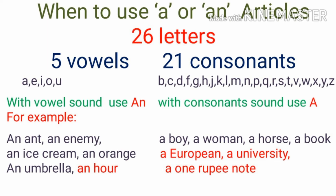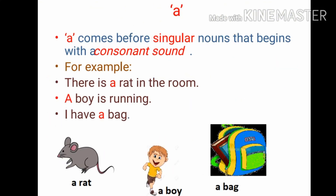Let's do this in more detail. A comes before a singular noun that begins with a consonant sound. That means if our noun is singular and it gives the sound of a consonant, then we will use a before the noun. For example: there is a rat in the room, a boy is running, I have a bag. All three are singular and give a consonant sound.